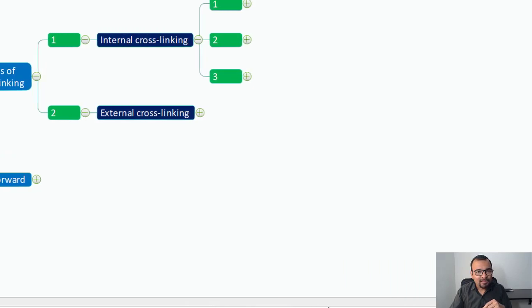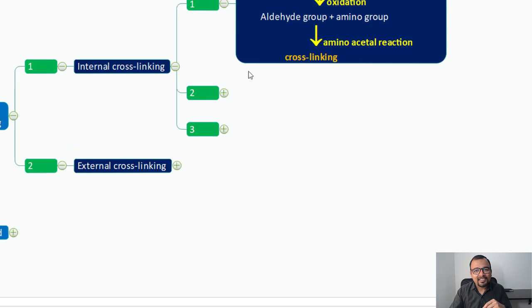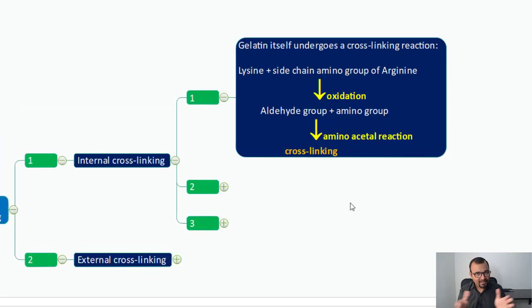Here are three important points as per internal cross-linking, and here is the small diagrammatic representation of cross-linking formation. Gelatin itself undergoes a cross-linking reaction. Lysine is one of the proteins and arginine is another protein present in gelatin itself. Lysine and the side chain amino group of arginine get oxidized and form the aldehyde group compound. This aldehyde group compound can again react with the amino groups present in arginine in the process of amino acetyl reaction and result in the formation of cross-linking.